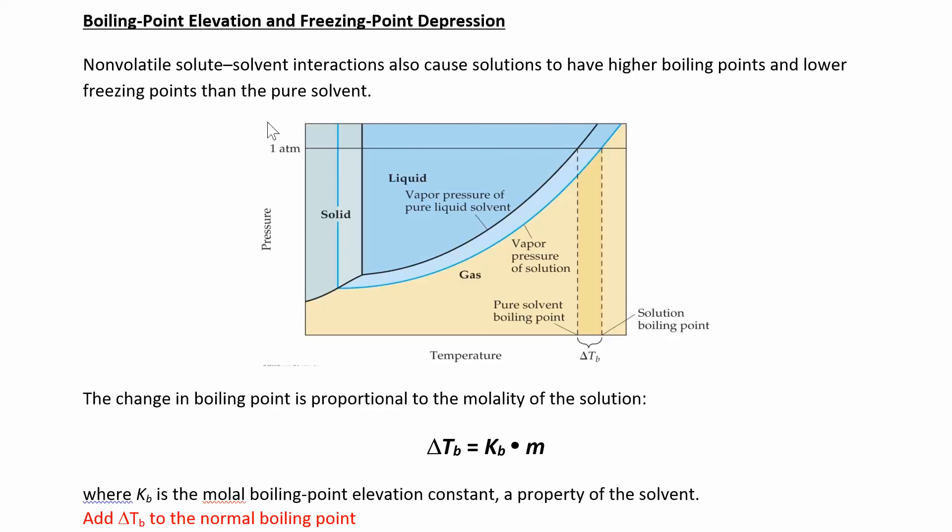Okay, so let's continue our discussion on colligative properties. Now we're going to look at boiling point elevation and freezing point depression. Whenever you make a solution, the boiling point is going to go up and the freezing point is going to go down compared to whatever your solvent wants.